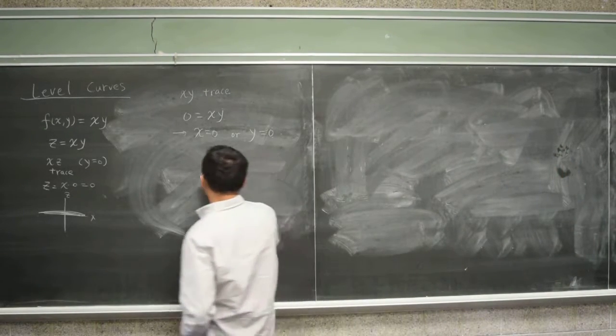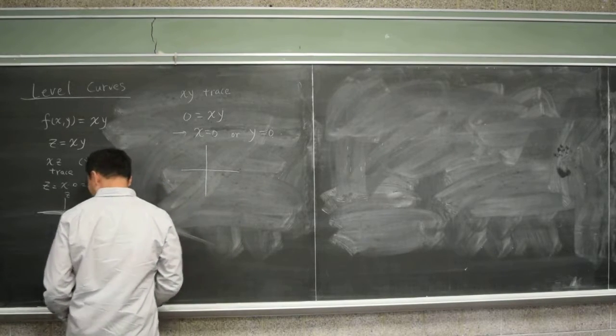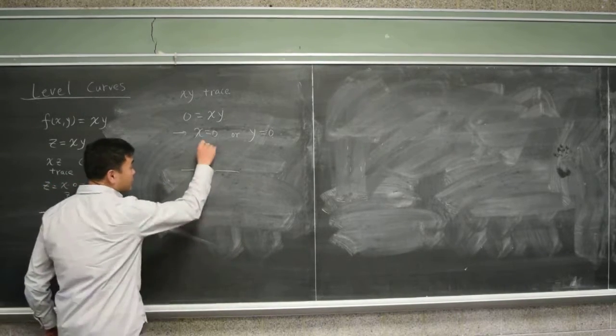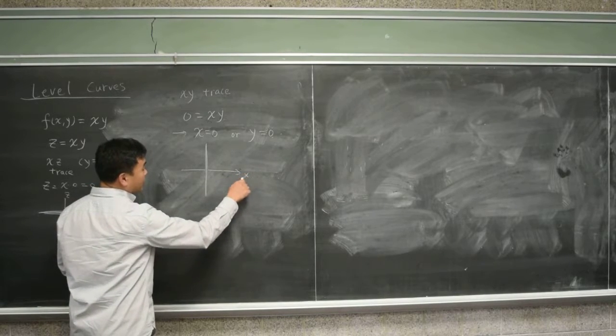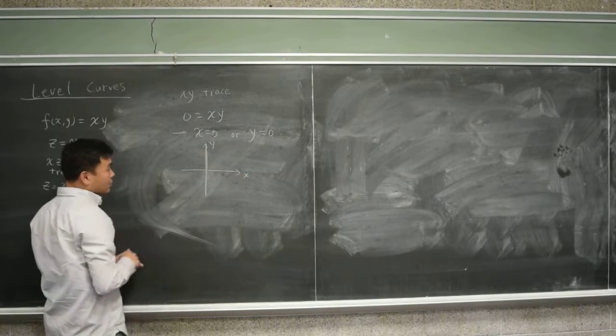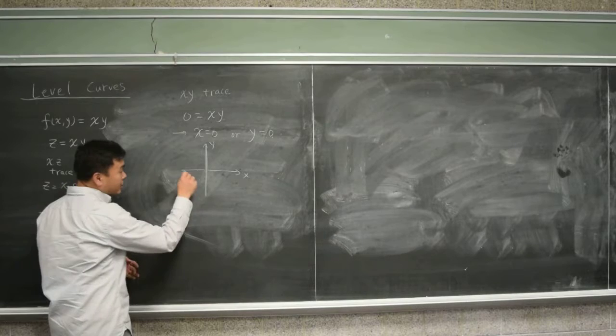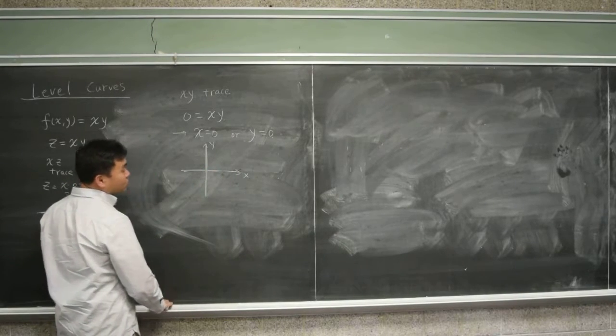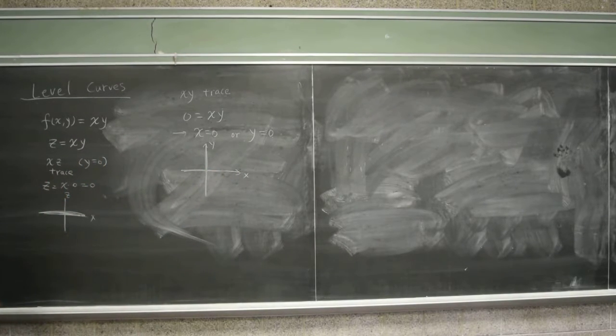And x equal to zero means the vertical line, this one. This is x, that's y. x equal to zero is the vertical line, and then y equal to zero is this horizontal line, so you get this.